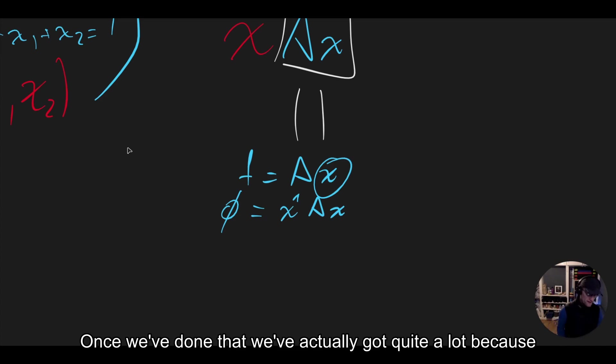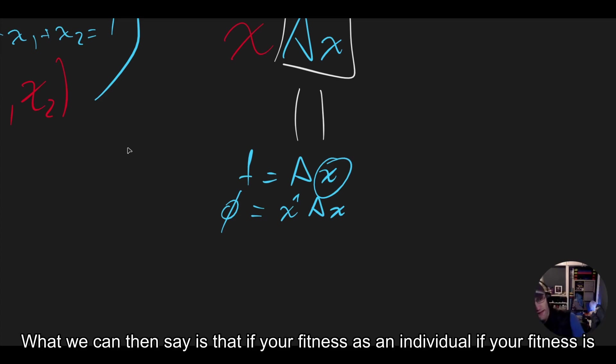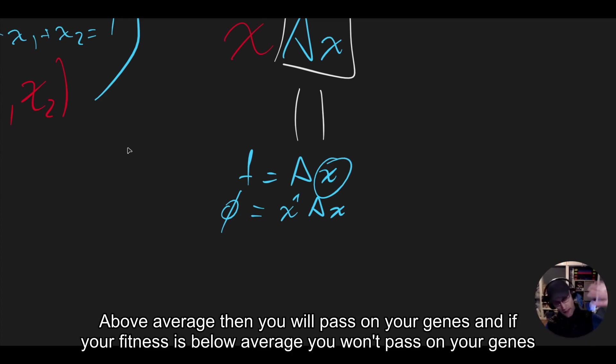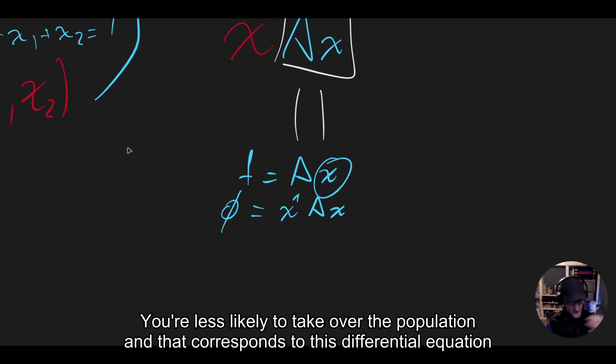And once we've done that, we've actually got quite a lot. Because what we can then say is that if your fitness as an individual, if your fitness is above average, then you will pass on your genes. And if your fitness is below average, you won't pass on your genes. So you're less likely to take over the population.